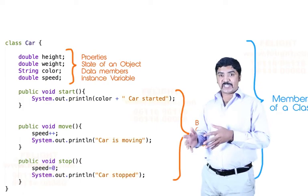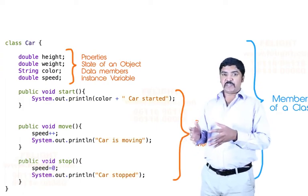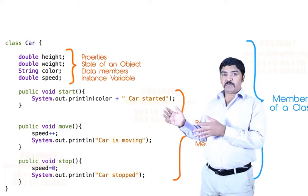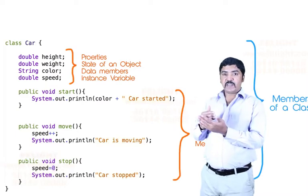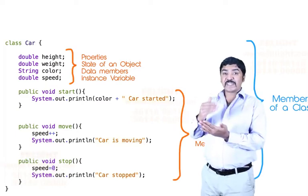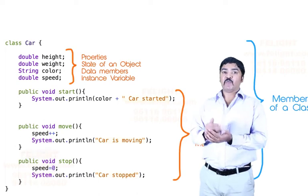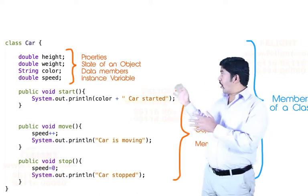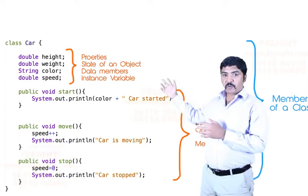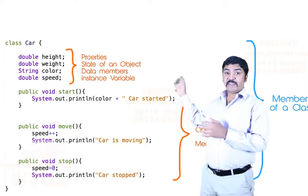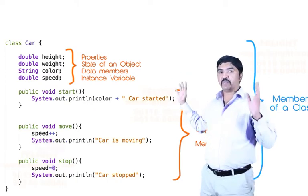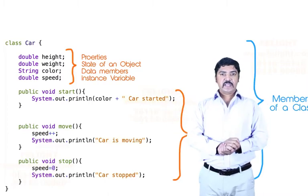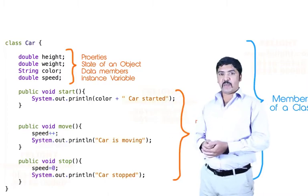What is a property? What is an instance variable? What is the state of an object and why do we call it the state of an object? Because it represents, at any given point in time, what the state of an object is - for example, what is its color, height, or weight. So properties can be called state of an object, data members, instance variables, or properties. Is it clear? Now, the methods...